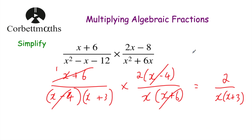That's it for the GCSE Further Maths topic of multiplying algebraic fractions. To multiply algebraic fractions, you multiply the numerators and multiply the denominators. It can be useful to factorize anything that can be factorized before you multiply, and to cancel down before multiplying as well. If you find this video useful please like it and subscribe to my YouTube channel. Thank you, cheers, bye.